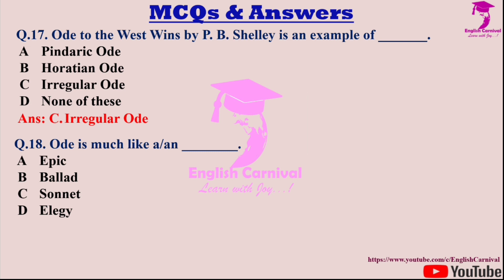Question eighteen: An ode is much like a or an — dash. Options are A: Epic; B: Ballad; C: Sonnet; and D: Elegy. The correct answer is D — an ode is much like an elegy.